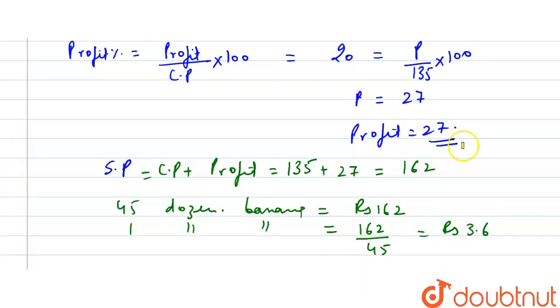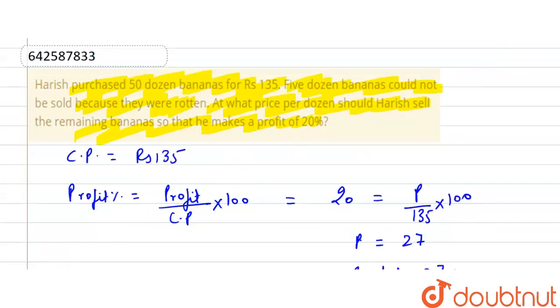Price per dozen is 162 divided by 45 equals Rs. 3.6. This is our answer. Thank you.